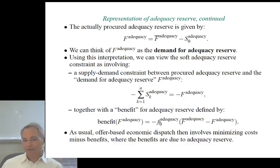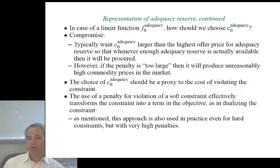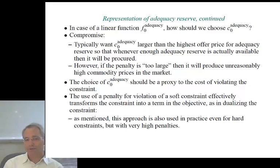Using a penalty for violation of a soft constraint effectively transforms the constraint into an objective term, similar to dualizing the constraint. To evaluate a proxy to the cost of violating an adequacy constraint, we ask: what is the reduction in surplus? This cost is due to the increased probability that involuntary curtailment will be necessary to maintain security. The change in surplus equals the value of lost load minus the savings from not generating — and since savings are a small fraction of value of lost load, this cost is approximately value of lost load times expected energy curtailment.